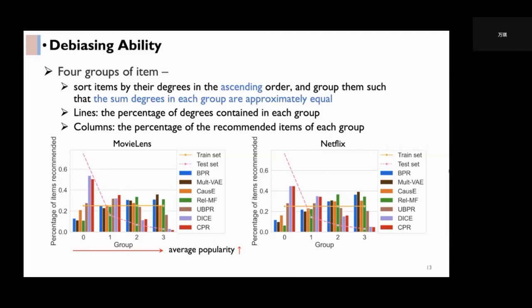For an unbiased recommendation, its recommendation distribution is expected to match the distribution of the testing set. From these figures, we can see that CPR and DICE achieve the best debiasing effect. They recommend more items from unpopular groups, making the distribution closer to the testing set distribution.